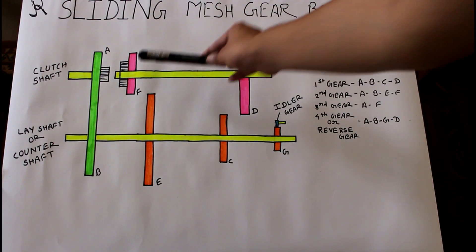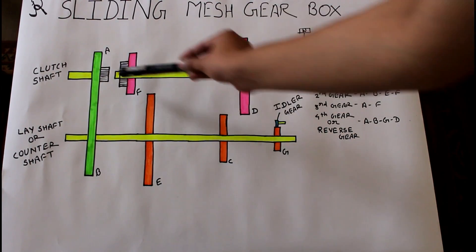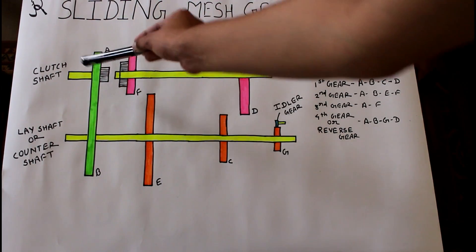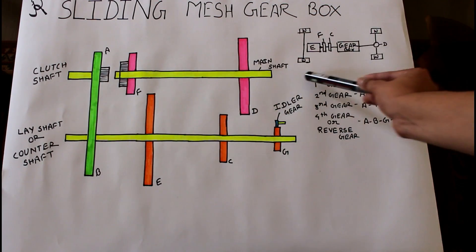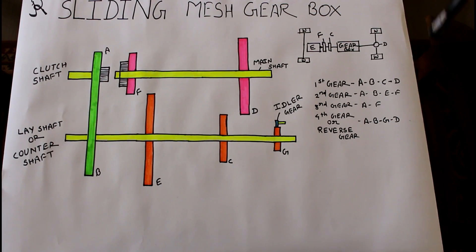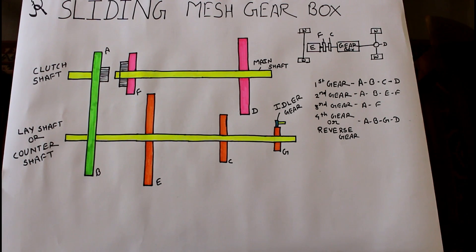For the third gear, gear F is moved forward using the selector mechanism and coupled directly with gear A. Power is then directly transmitted to the main shaft, then to the propeller shaft, and then via the differential to the wheels. Third gear gives the maximum power transmission through the gearbox and is the condition under which we can achieve the highest speed.